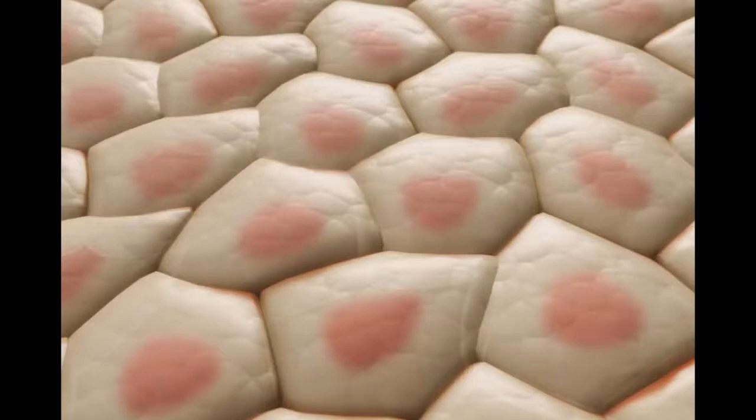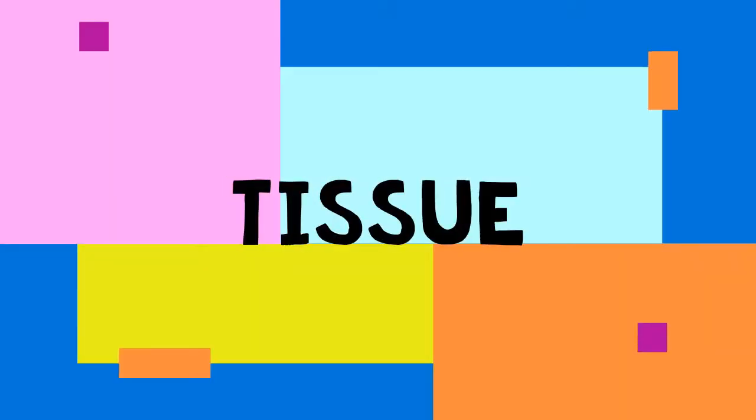Cells work together. They are organized into groups of cells that all perform the same function. These groups of cells are called tissue. Tissue is a collection of the same kinds of cells working together to do the same job.